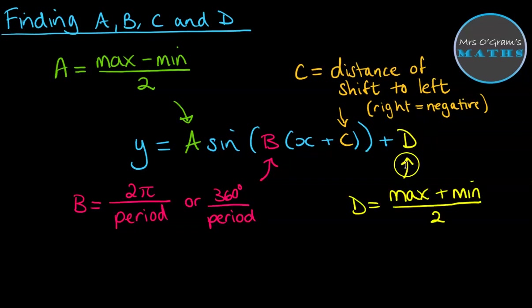And finally our value of D, that's the vertical shift. We find that out by doing our maximum plus our minimum and divide it by 2. What that will do is help us to see where that centre line of the original sine graph has moved up towards, gives us the average between the maximum and minimum points, and that's how much our graph has shifted up by.